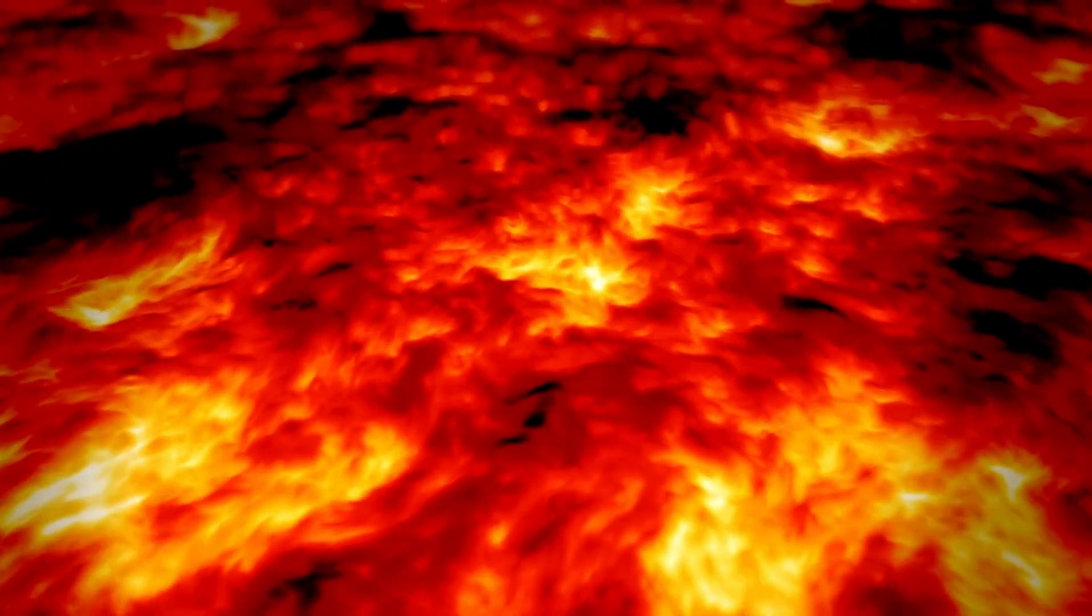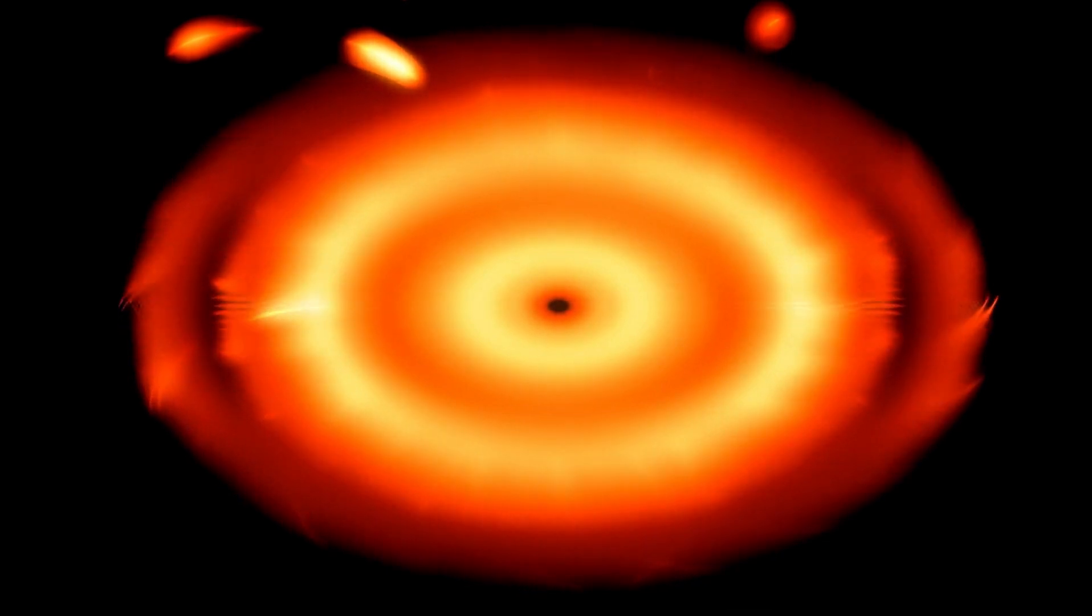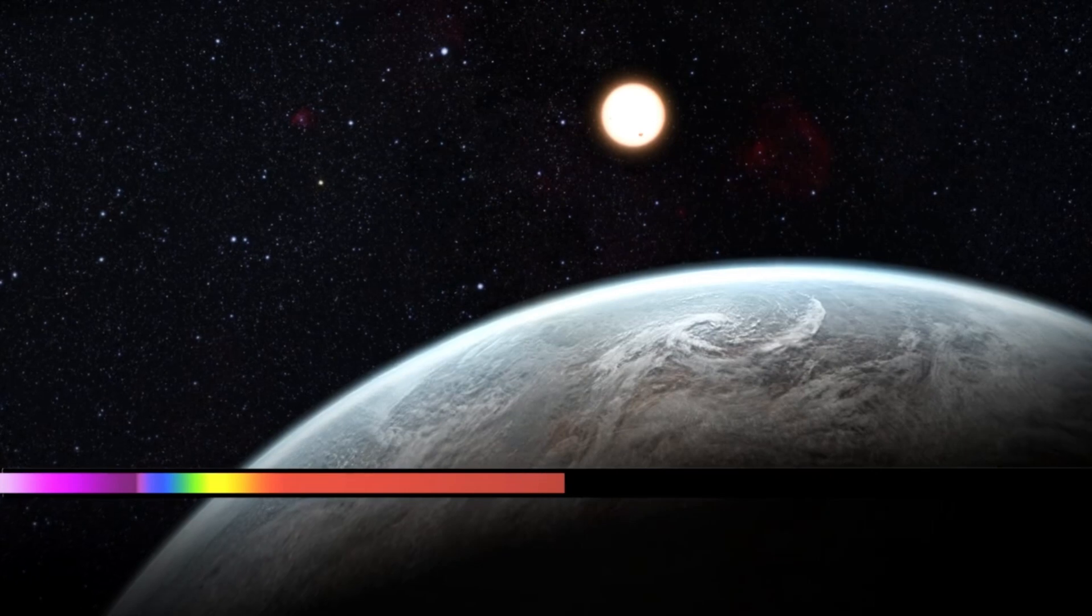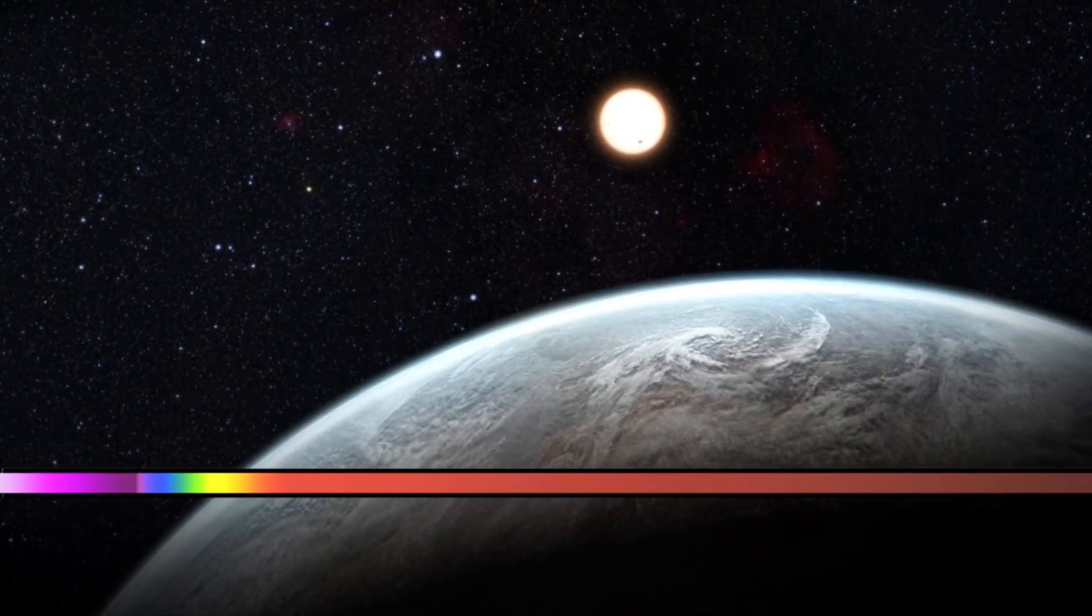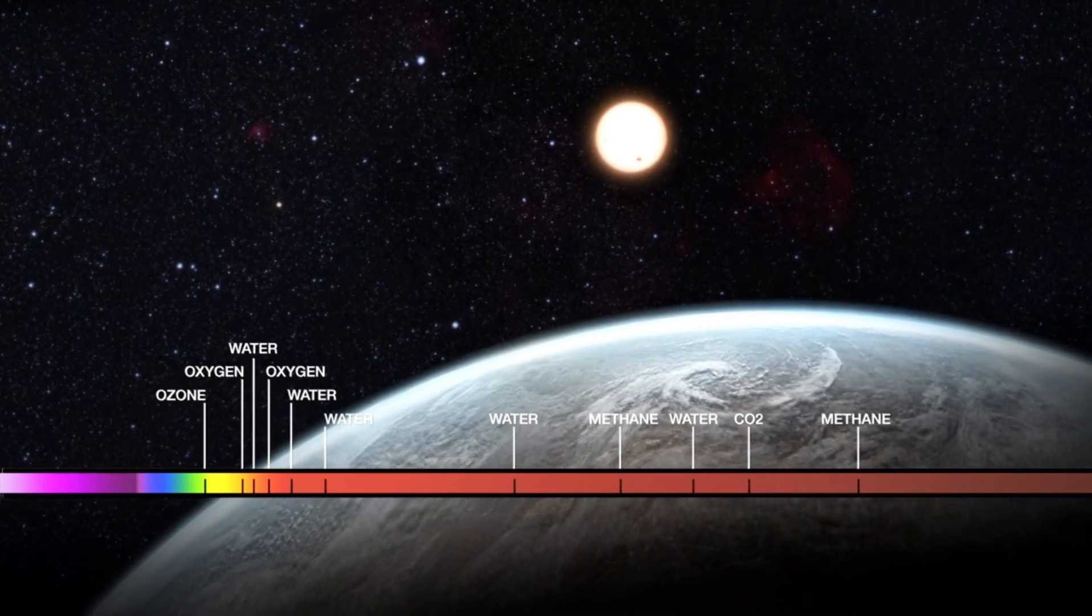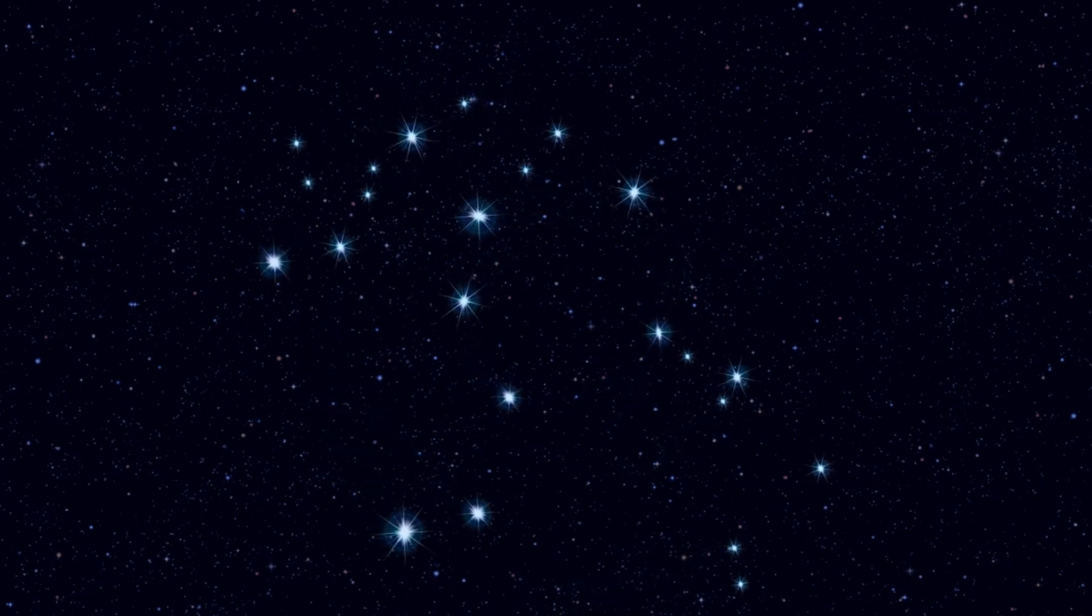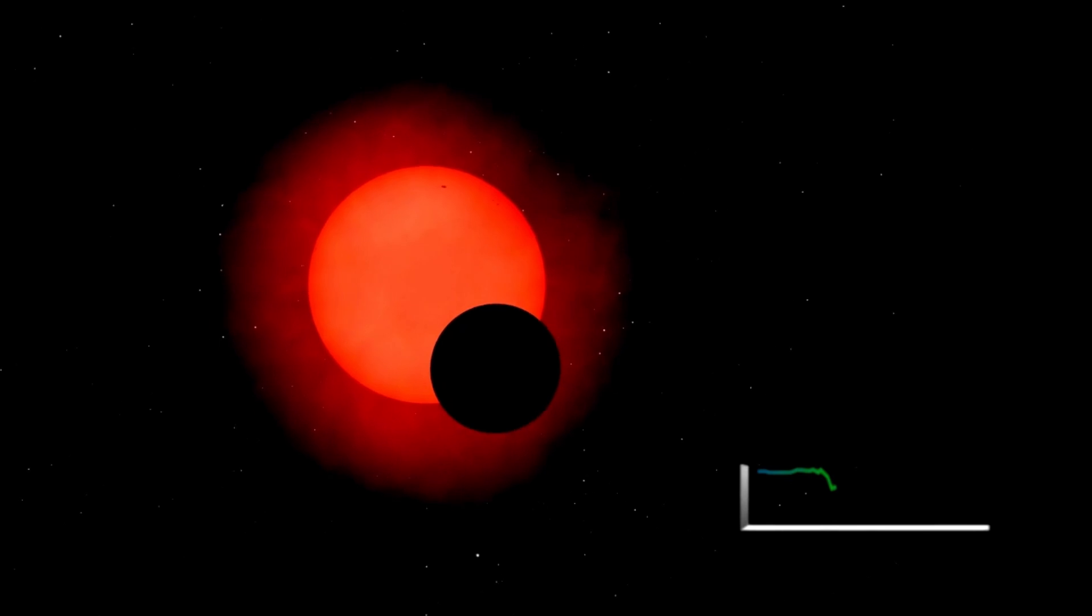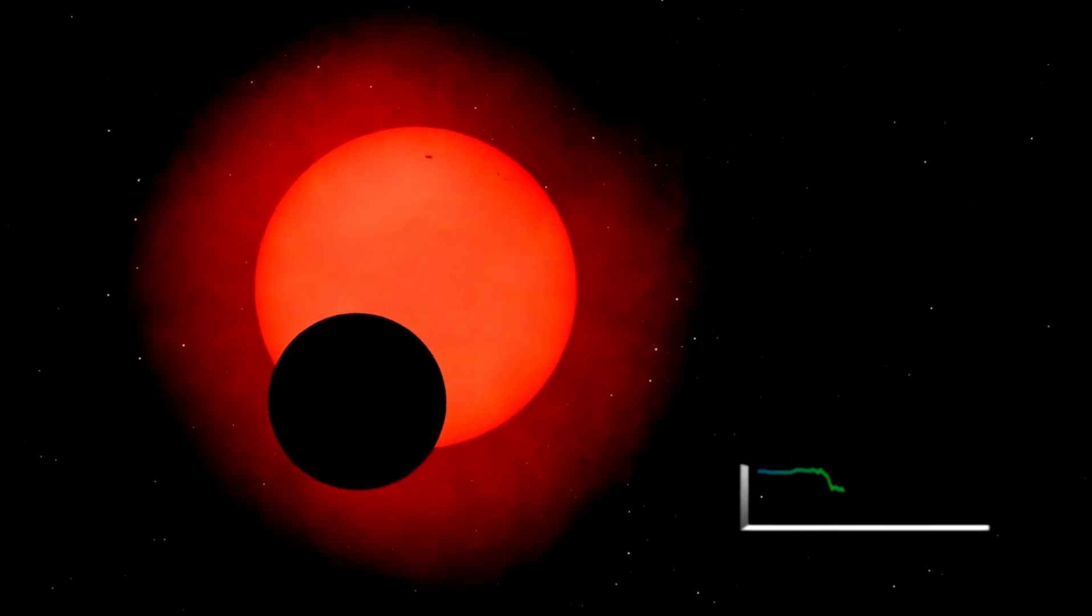The proximity of Proxima b to its star is another significant characteristic in its habitability. Proxima b takes only 11.2 Earth days to orbit around Proxima Centauri. While it remains in the star's habitable quarter, Proxima Centauri is a dim red dwarf star, giving off much less light than our sun. Even with its reduced luminosity, the solar flares and particle winds of Proxima Centauri still present a gigantic threat to any capacity life on Proxima b. The intense radiation and solar activity might render it challenging for life to survive on the planet.